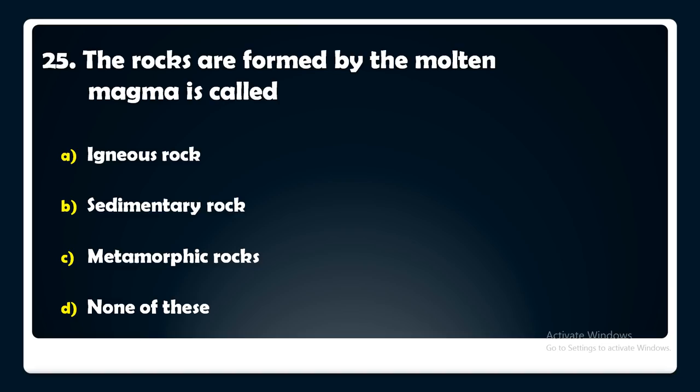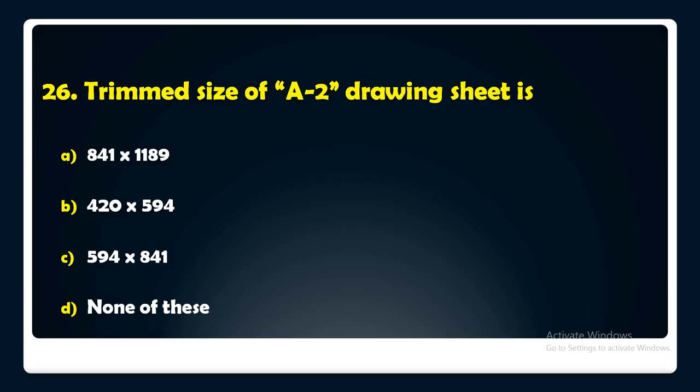The trimmed size of an A2 drawing sheet is — 841 x 1189 mm, 420 x 594 mm, 594 x 841 mm, or none of these? The answer is: the trimmed size of an A2 drawing sheet is 420 x 594 mm.